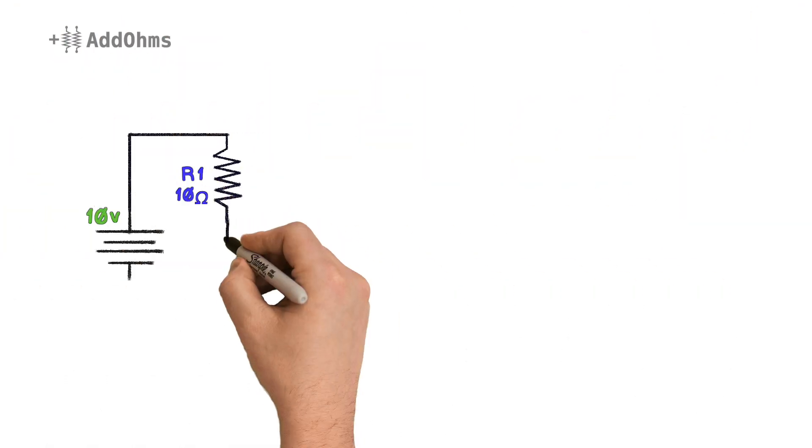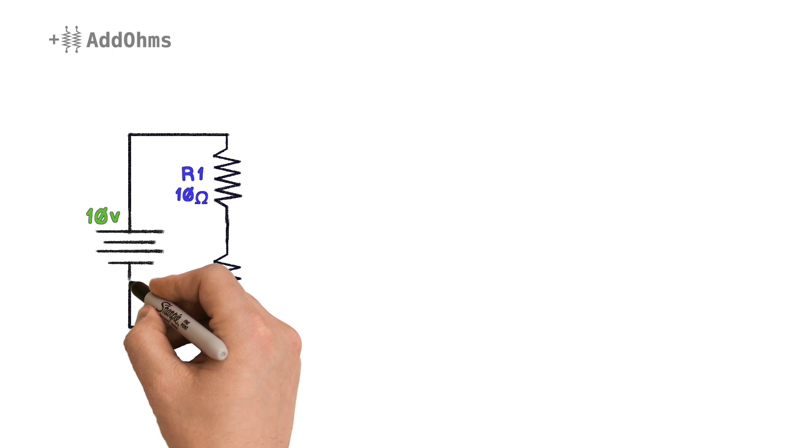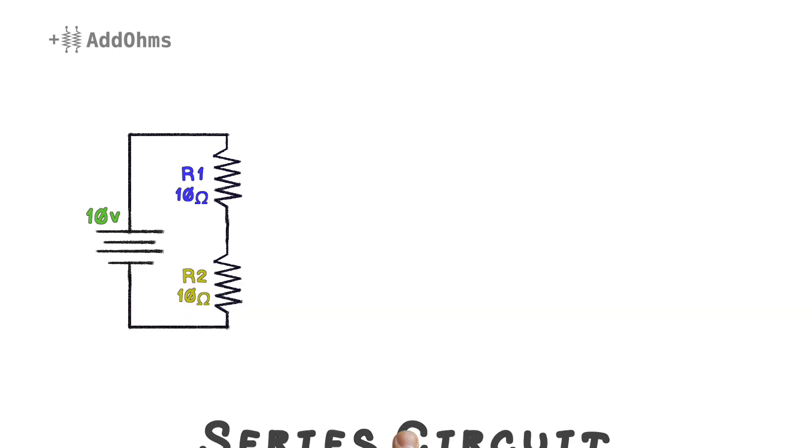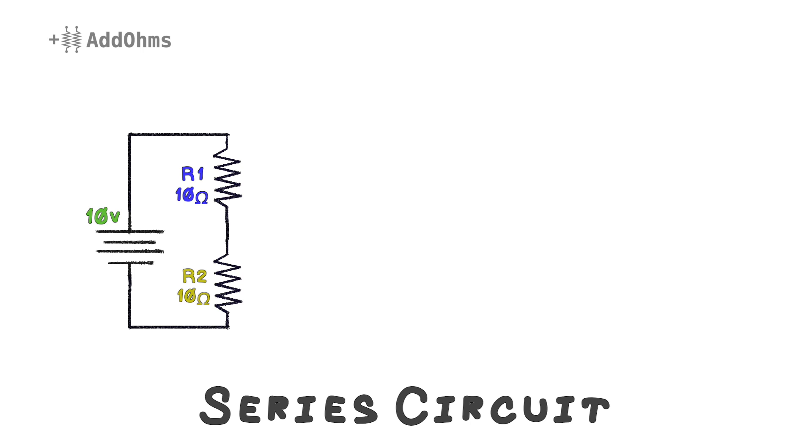So what happens when we add another 10 ohm resistor and call it R2? This creates a series circuit. Think about this circuit from the electron's point of view. We've just doubled the amount of resistance all of the electrons leaving the battery sees. Now our current calculation becomes 10 volts divided by 20 ohms for a total current of 500 milliamps.